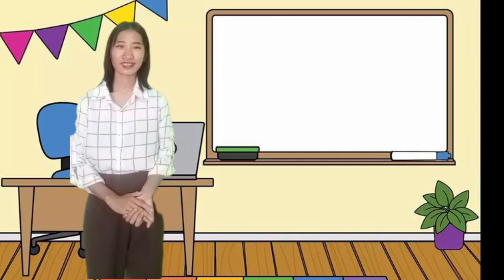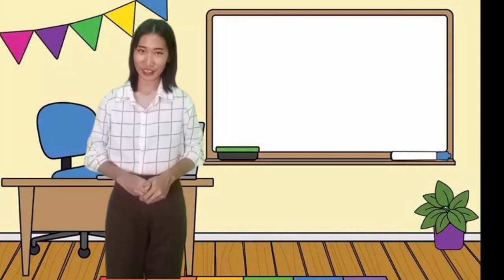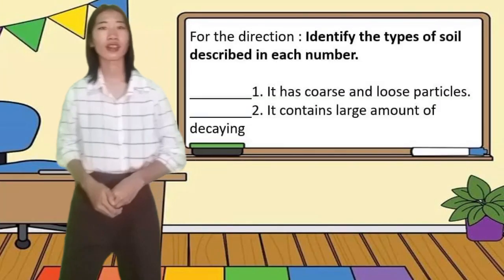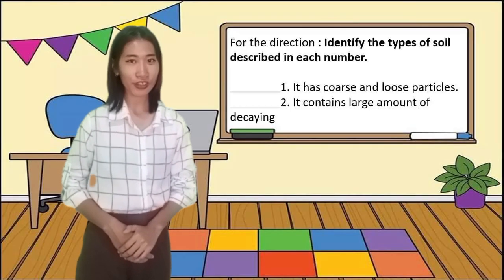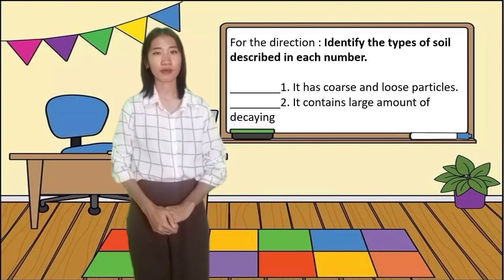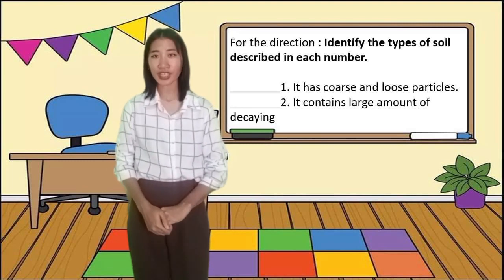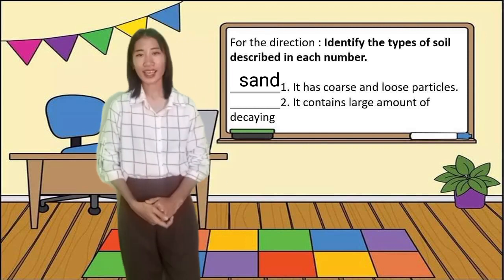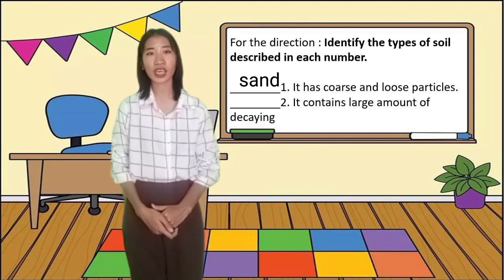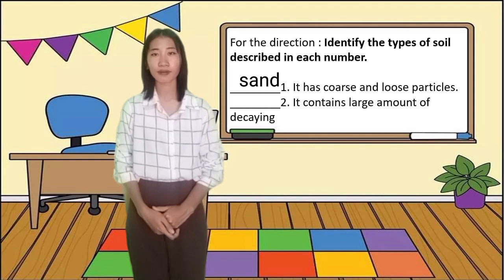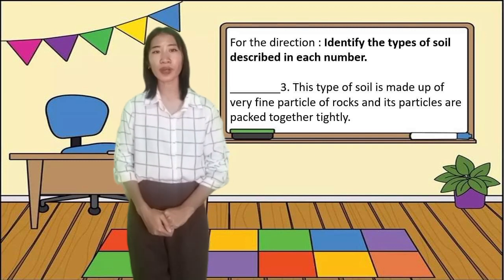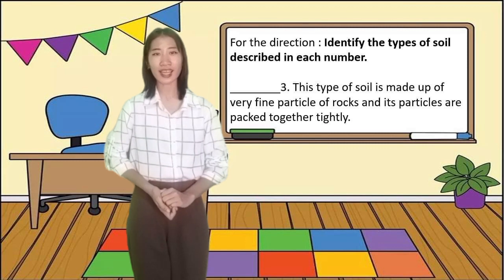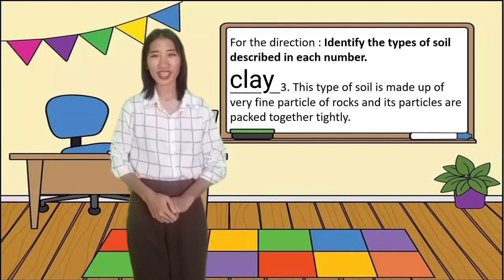Very good class, job well done! Now you are all ready for the activities. Identify the types of soil described in each number. Number one: it has coarse and loose particles. The answer is sand. Number two: it contains a large amount of decaying plants and animals. The answer is loam. And the last one: this type of soil is made up of very fine particles of rocks and its particles are packed together tightly. The answer is clay. Very good!